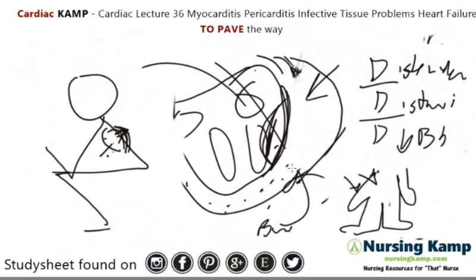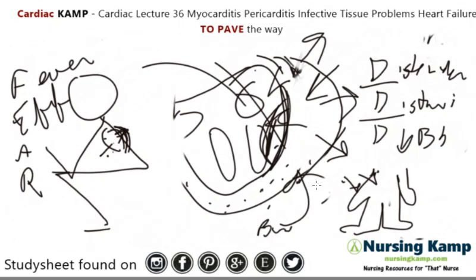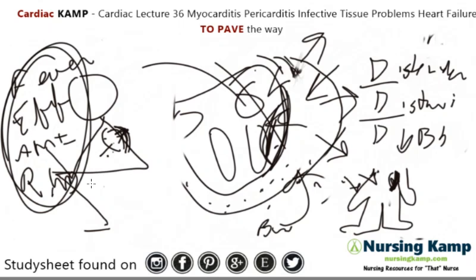Another complication to fear after pericarditis is Dressler's syndrome. What that involves is fever and effusions — fluid starts to build up outside the heart, resulting in pericardial effusions. Patients can also suffer an acute MI and develop that characteristic friction rub. So you fear pericarditis for these reasons.